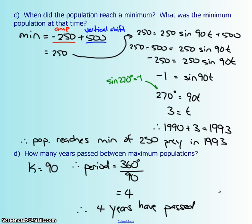The last question in this set of questions is how many years have passed between maximum populations. That means from maximum to maximum, how many years have gone by? Well, if you're going to go from maximum to maximum, that's basically one full cycle. So you're going to use the k value that's in the equation and then you're going to plug it into the period equation. So that's going to give you a total of 4 years between your max population and then your max population. Let's try one more question.